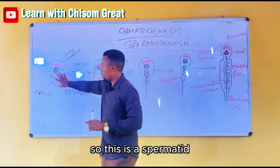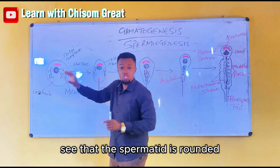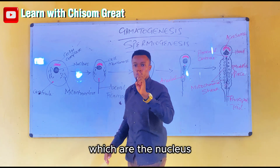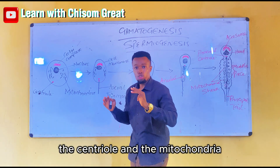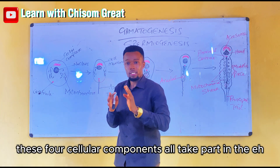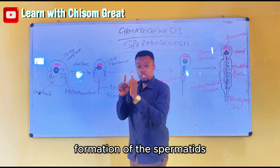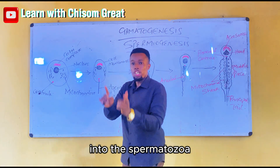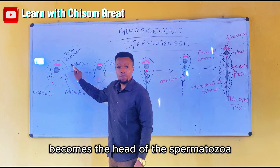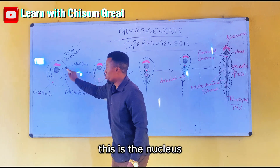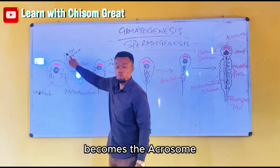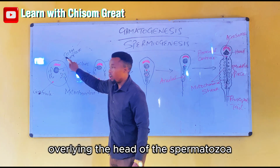The spermatid is rounded and contains four cellular components: the nucleus, the Golgi complex, the centriole, and the mitochondria. These four cellular components all take part in the transformation of the spermatid into the spermatozoon. The nucleus becomes the head of the spermatozoon. The Golgi complex becomes the acrosome overlying the head of the spermatozoon.